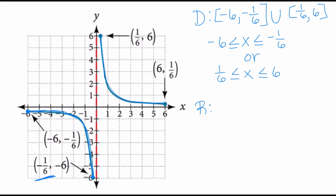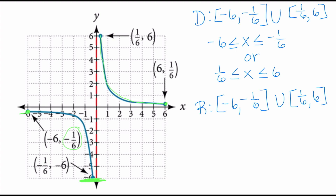For the range, clearly the lowest y-value is negative 6 and the highest on the left piece is negative 1.6. So the range for the left piece is from negative 6 to negative 1.6. Then on the right piece, the lowest y-value is positive 1.6 and it goes up to positive 6. So the range is union from 1.6 to positive 6. Interestingly, the domain and the range end up being the same. In inequality notation: negative 6 ≤ y ≤ negative 1.6, or 1.6 ≤ y ≤ 6.